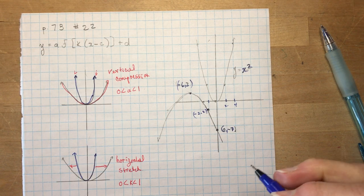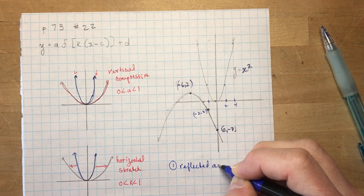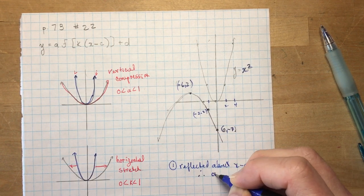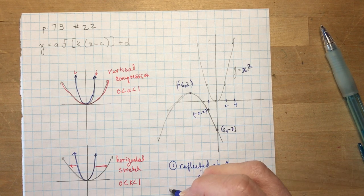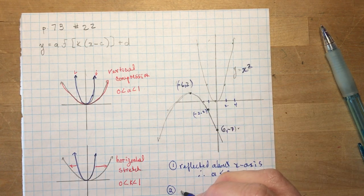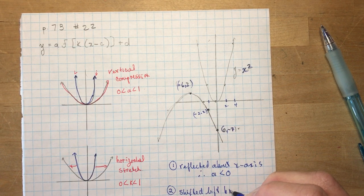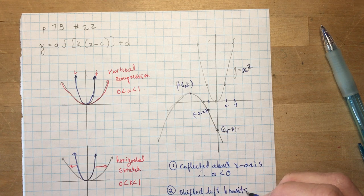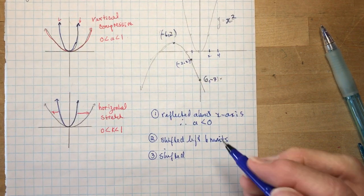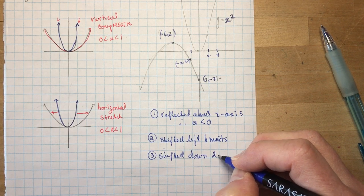What do I know already? First of all, we know it's been reflected about the x-axis. And because it's reflected about the x-axis, that means that a is negative. The second thing I know is the vertex of the new parabola, which is minus 6 and 2. That means it's been shifted left 6 units and shifted down 2 units. So I know the shifts. That means I know my c and d values.